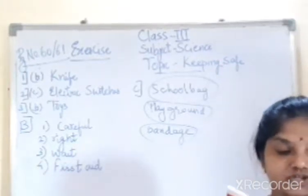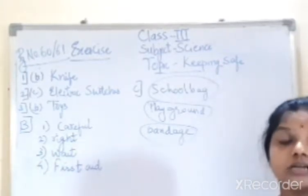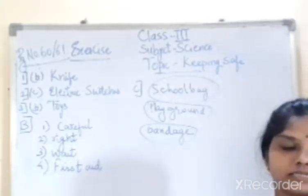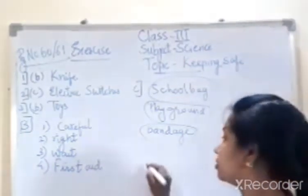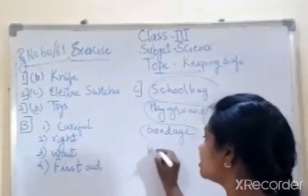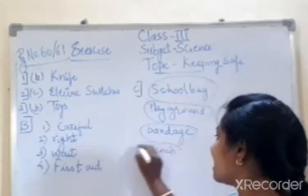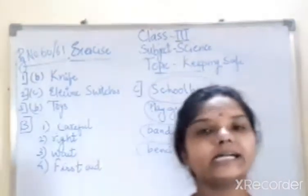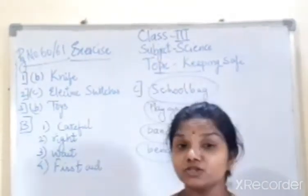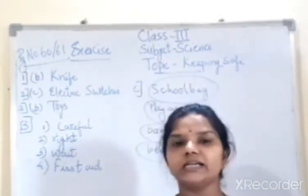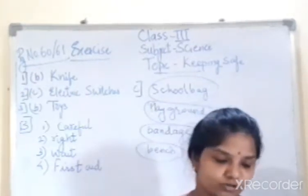Fourth group: blade, bench, knife, or scissors. The odd one out is bench, because blade, knife, and scissors are all things used for cutting, but we do not use a bench for cutting. So bench is the odd one out.